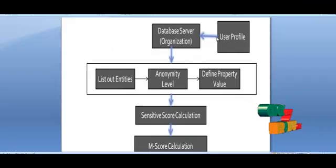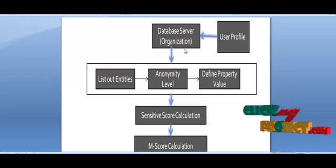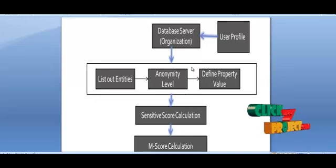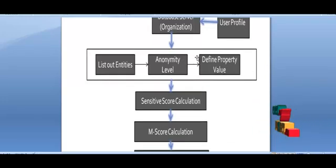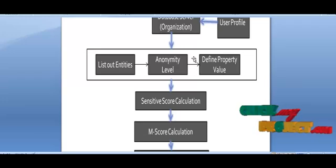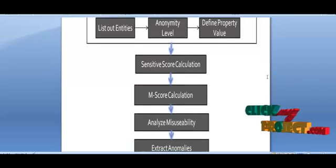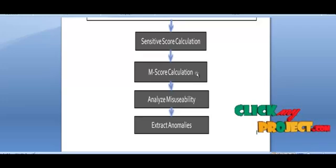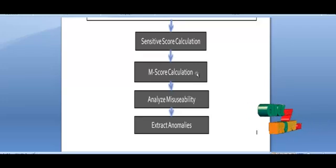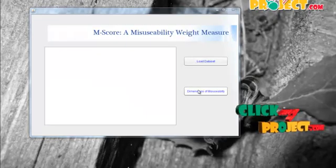Our workflow is as follows. The user profile defines the user behavior within the organization. First, dimensions of misusability have to be listed. For that, we list out the entities. After that, we find the anonymity level for each entity. Property values are then assigned to entities. Next, we calculate the sensitivity score using the sensitivity score function. Then, the M-Square value is calculated for the whole data using the M-Square algorithm. Finally, we analyze misusability and extract anomalies to publish a new table without any anomalies.